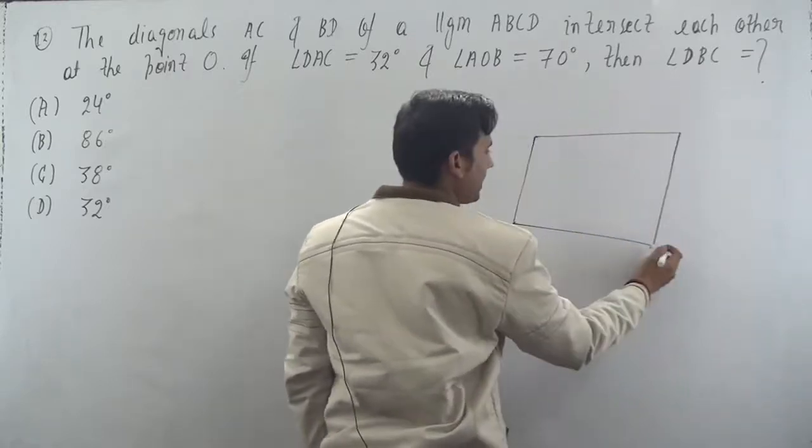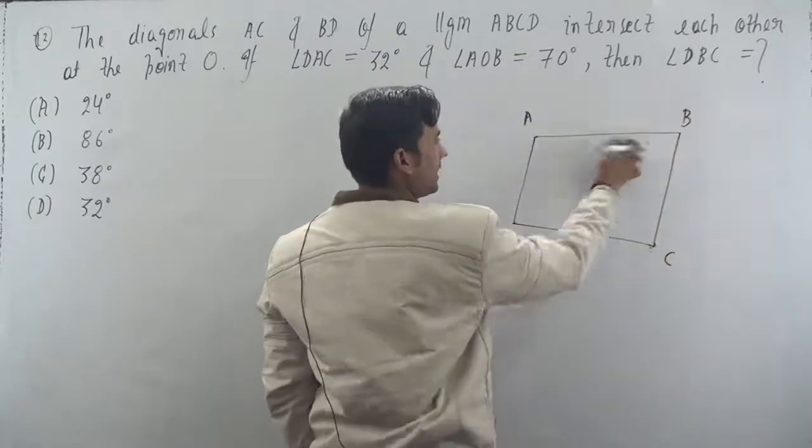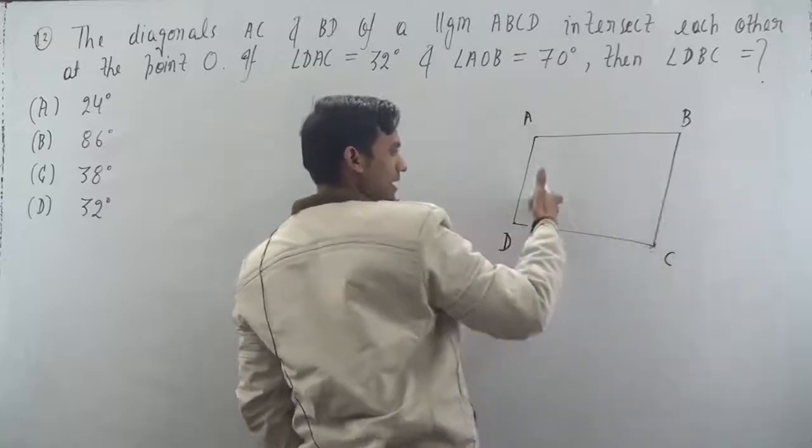This is a parallelogram ABCD. Correct. AB is parallel to CD and BC is parallel to AD.